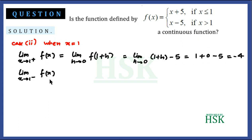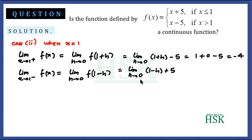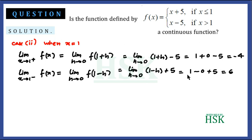The left hand limit is: limit as x → 1⁻ of f(x) = limit as h → 0 of f(1 - h) = limit as h → 0 of (1 - h + 5). Since 1 - h is less than 1, f takes the value x + 5. Applying the limit gives 1 - 0 + 5 = 6.